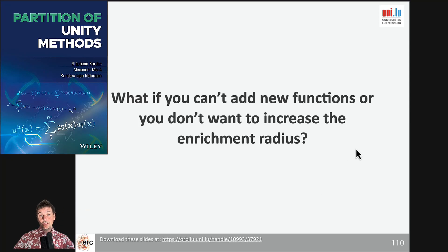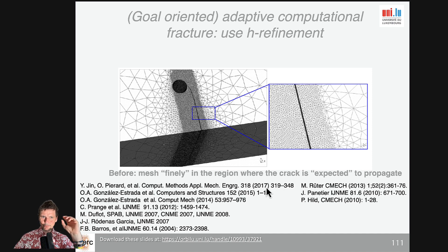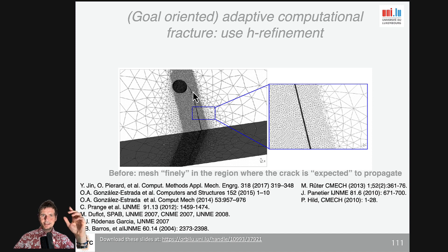Sometimes you don't want to add new functions, or you cannot do it, or you don't want to increase the enrichment radius. So in that case, this is the paper I again strongly encourage you to look at, with Jin, Pierard, and myself in CMAME 2017. This is a paper where we do 3D adaptation of the mesh for calculating stress intensity factors in aerospace structures.